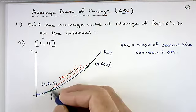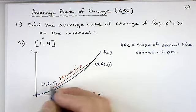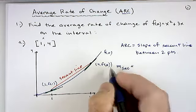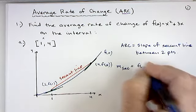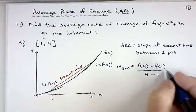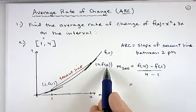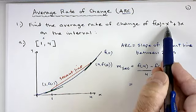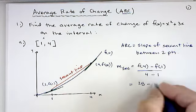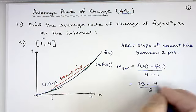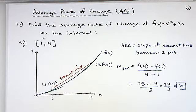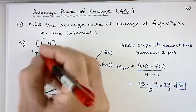Given that average rate of change is just the slope of the secant line and we have two points, the slope M of our secant line is the change in y over the change in x: F(4) minus F(1), over 4 minus 1. If you plug 4 into the function, that's 16 + 12 = 28. F(1) is 1 + 3 = 4. So 28 minus 4 is 24, divided by 3, giving an answer of 8 — which is a positive slope, as expected.